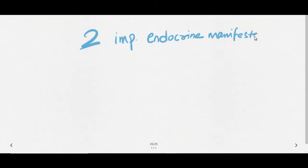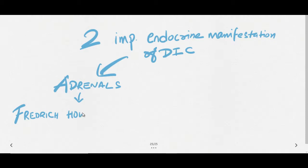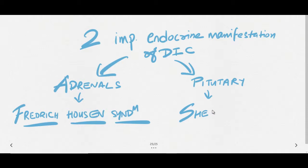What are the two important endocrine manifestations that you can see in DIC? As you have seen that adrenal is involved, so due to adrenal gland thrombosis and hemorrhage, it will not work, and due to that you will develop Waterhouse-Friderichsen syndrome. Pituitary will also be involved, and pituitary thrombosis and hemorrhage will end up in pituitary destruction that will lead to Sheehan syndrome. This is hypopituitarism. Waterhouse-Friderichsen syndrome and Sheehan syndrome are the two important endocrine manifestations of DIC.